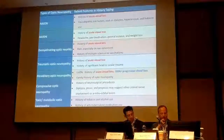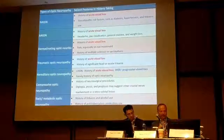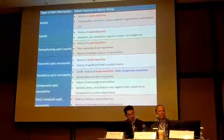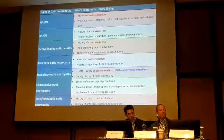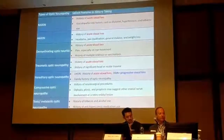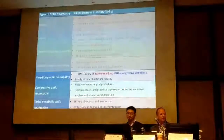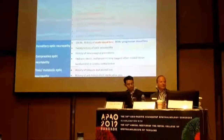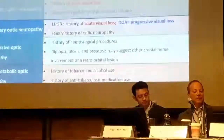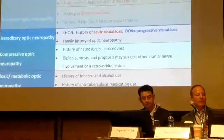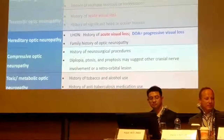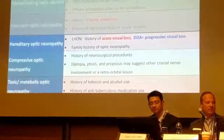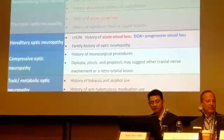If we look at all the types of optic neuropathies and discount those with acute visual loss, life is already much simpler — because what remains are hereditary optic neuropathy, compressive optic neuropathy, and toxic and metabolic causes.